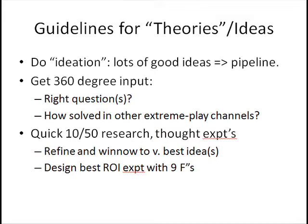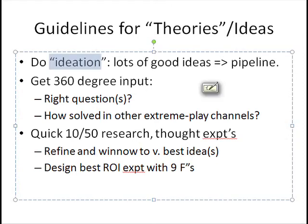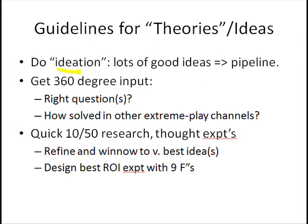To brainstorm and come up with a lot of ideas, we can do something called ideation. So if you go to Google Images and type this phrase in, you'll come across a bunch of stuff. The idea is really we brainstorm, we kind of diverge. We come up with a lot of ideas that are a little bit off the mark or a little bit whacked out or whatever. But that's the beginning of the pipeline — the best way to have one fantastic good theory or idea is to start with a lot of okay ones.